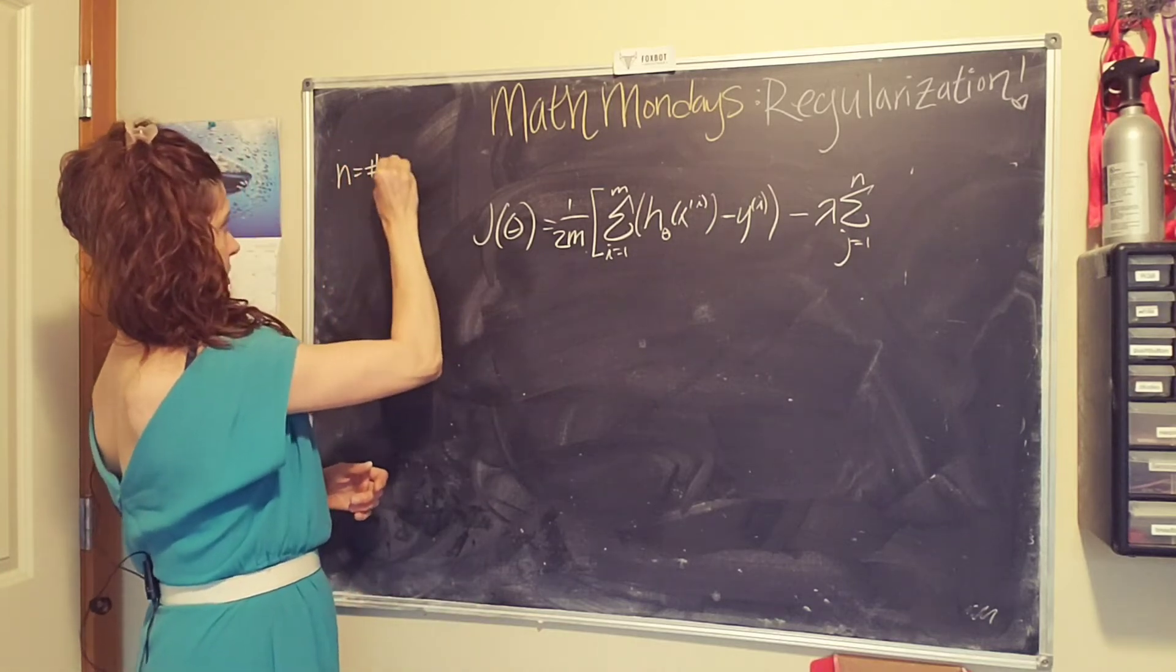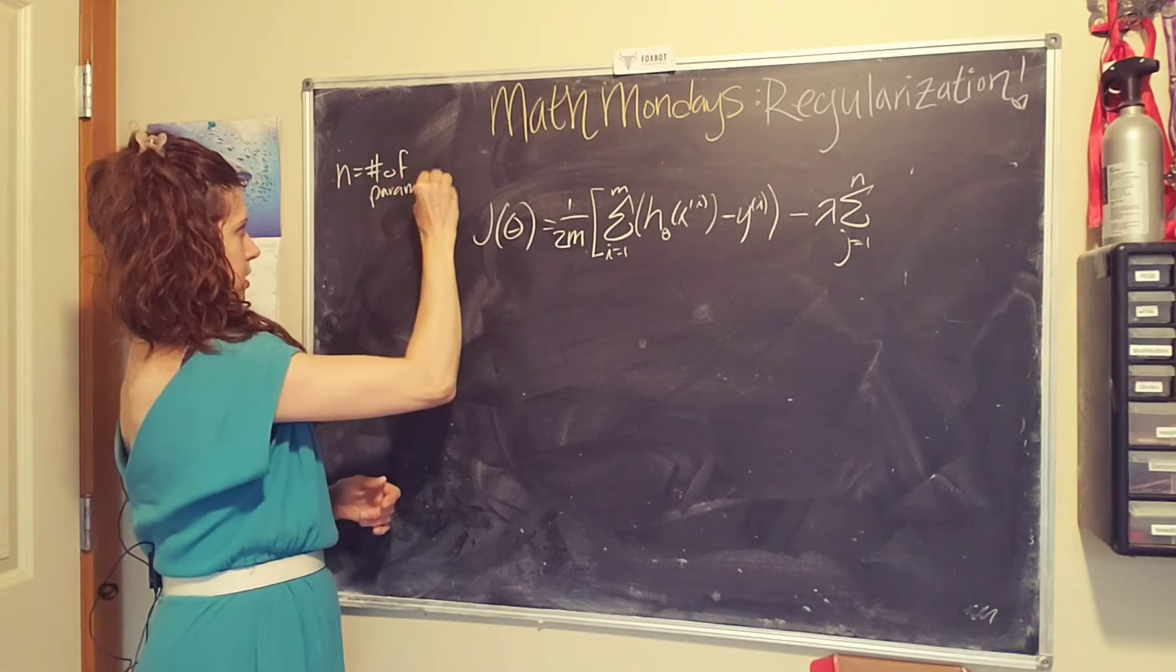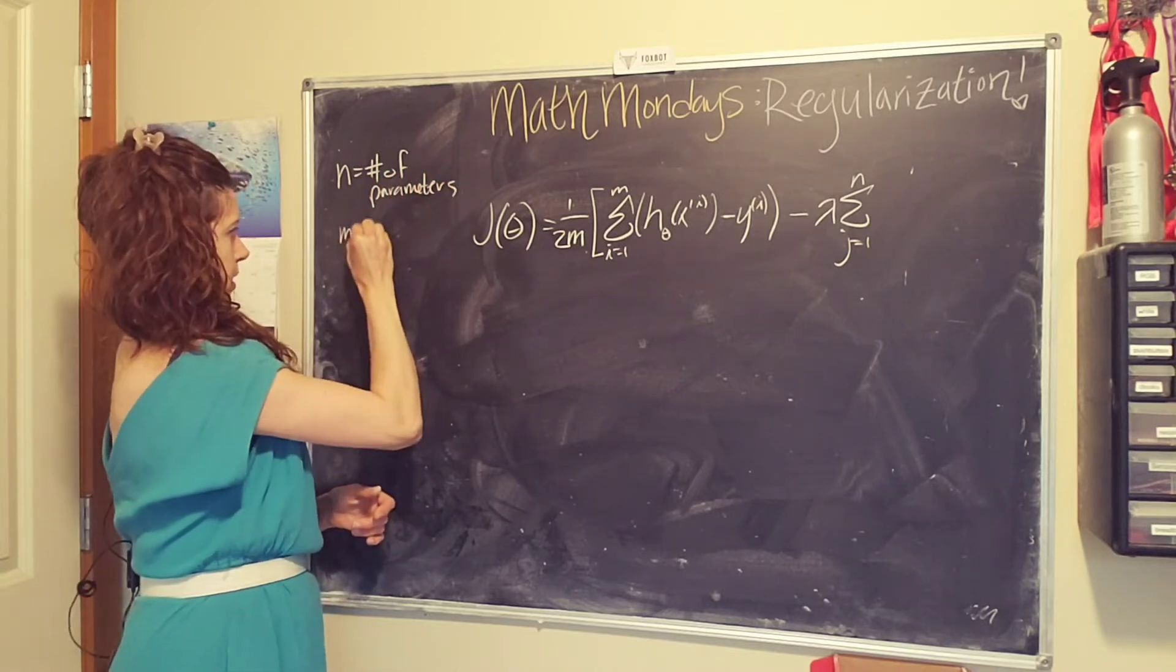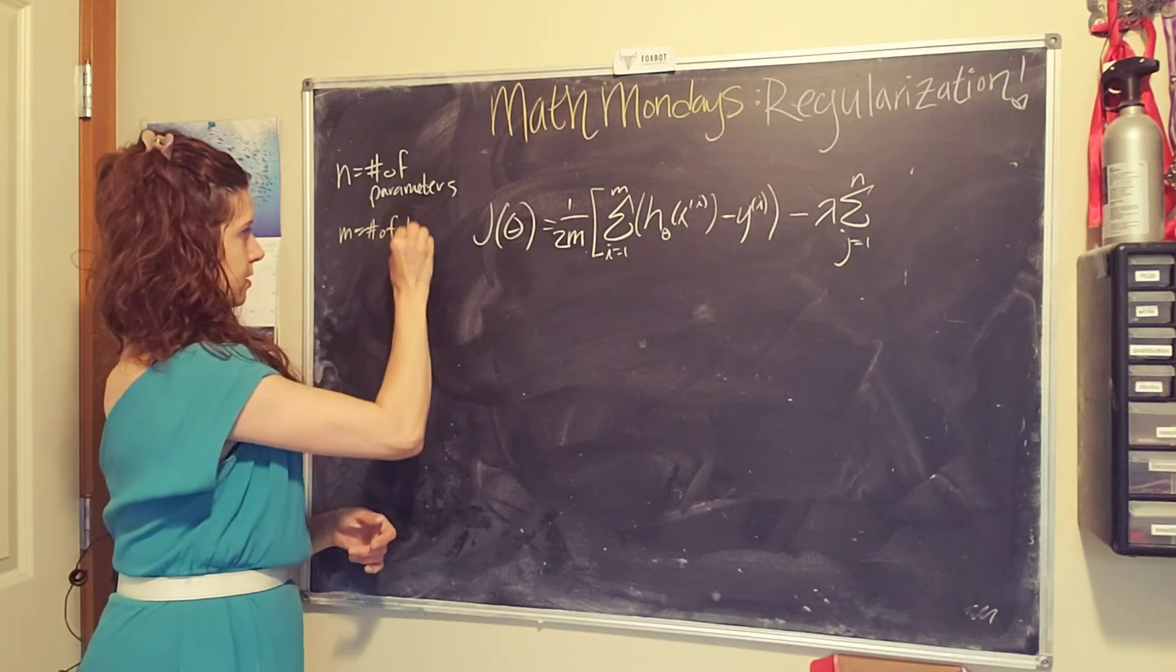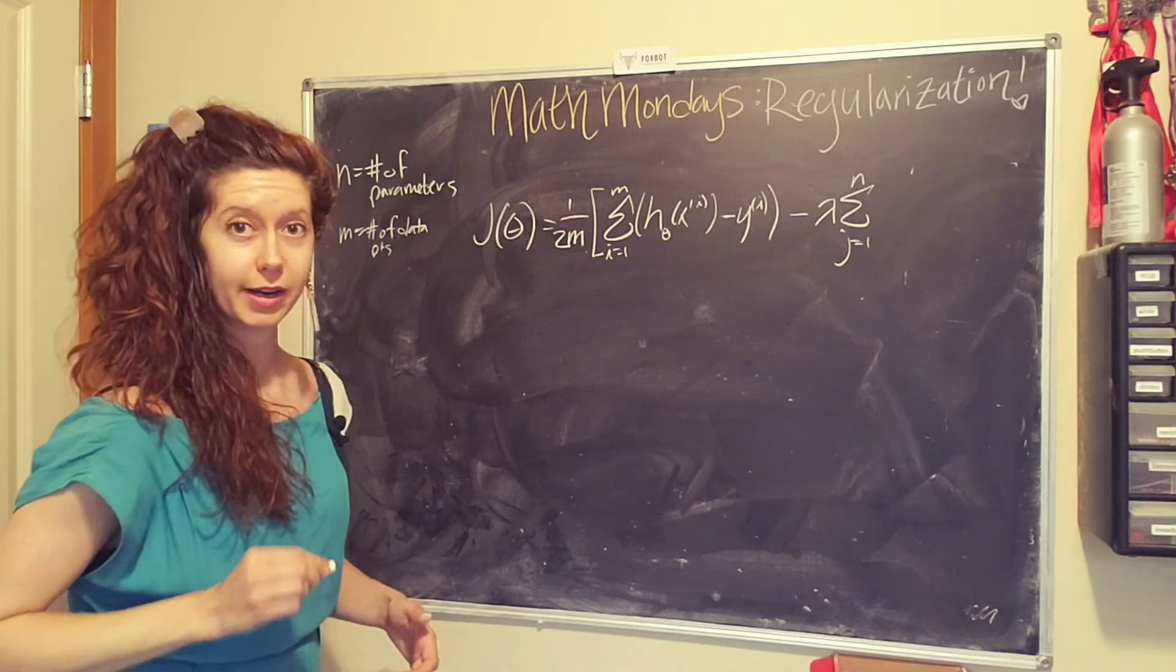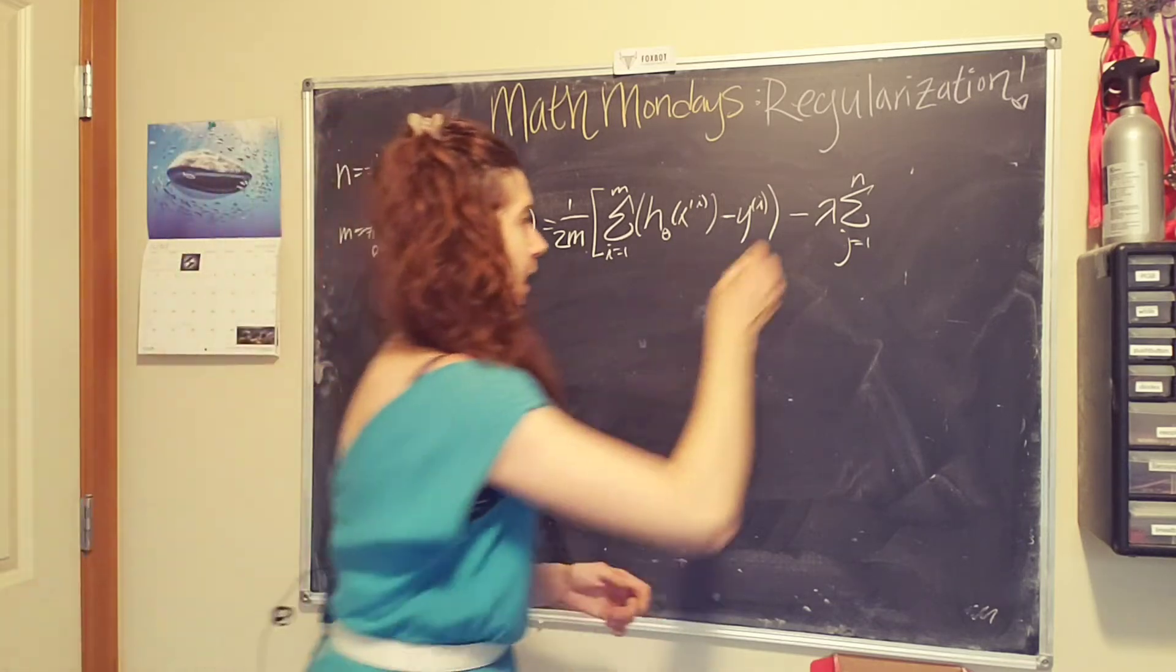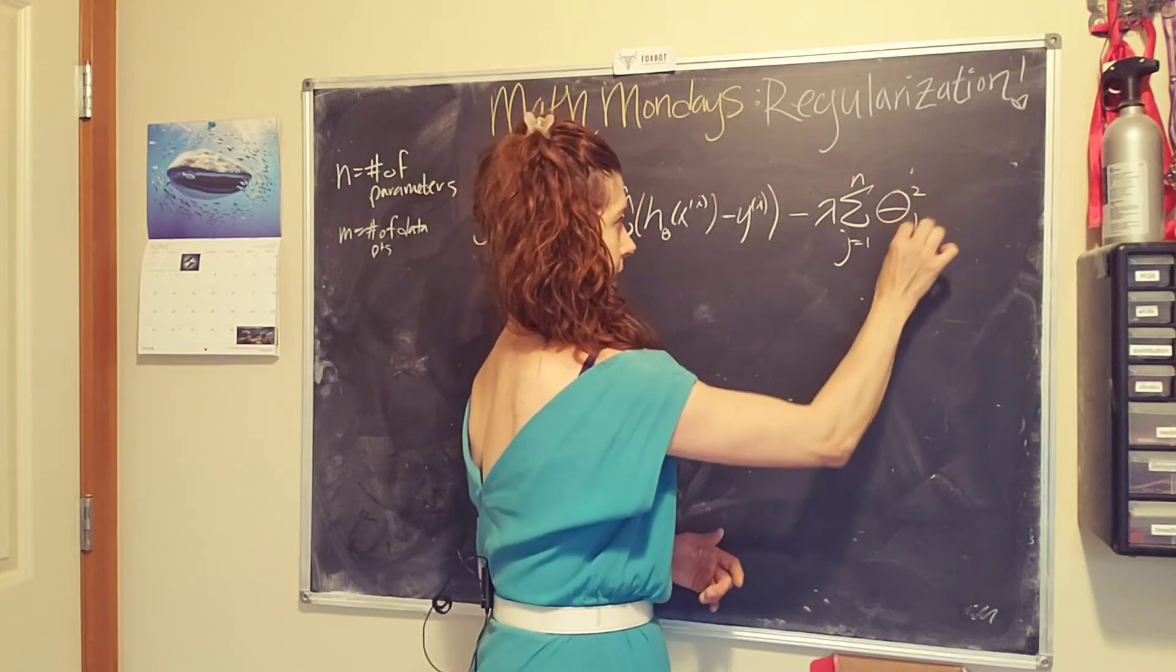n equals number of parameters and m equals number of data points. It's hard for me to look at the camera and write on the chalkboard at the same time. So we are going to just square each of these parameters.